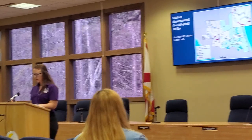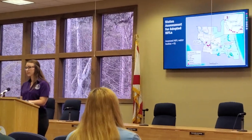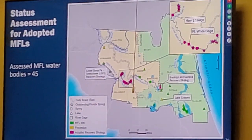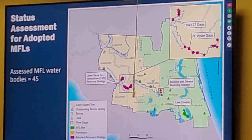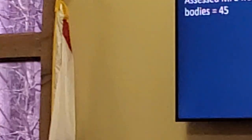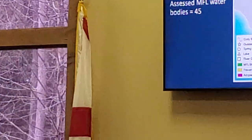This map shows the location of the 45 MFL water bodies assessed in the North Florida Regional Water Supply Planning Area, which include five springs, 15 outstanding Florida springs, 21 lakes, and four river reaches. Of these MFLs, the Water Resource Evaluation determined that 22 water bodies are currently achieving their MFLs and are projected to achieve their MFLs at 2045. Three water bodies are identified as being in prevention, and 20 water bodies are identified as being in recovery.